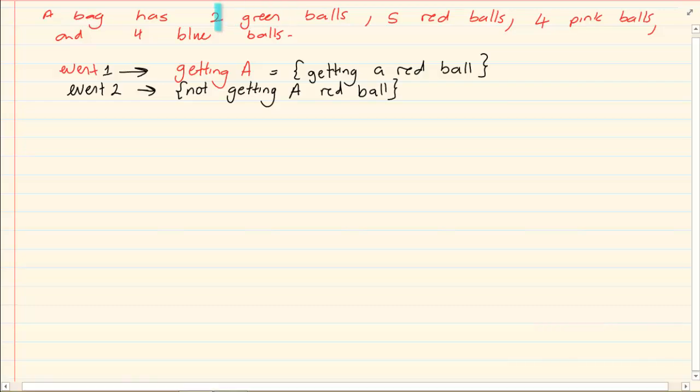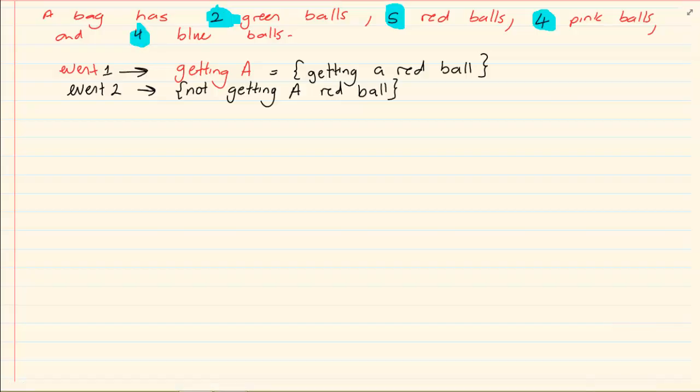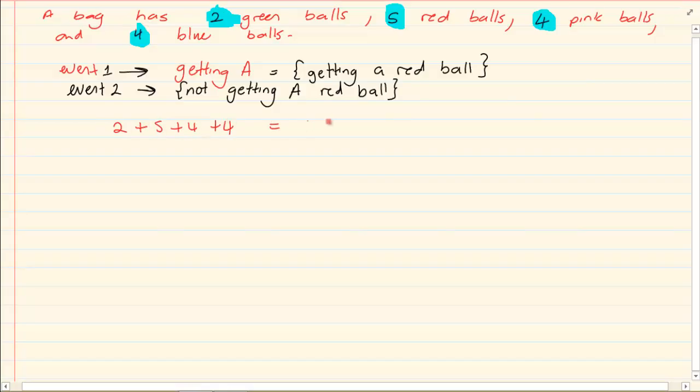So make sure you understand that before coming to this section. Now let us take the following example. We have a bag that has 2 green balls, 5 red balls, 4 pink balls and 4 blue balls. So what is our total? Our total is 2 plus 5 plus 4 plus 4 which is equal to 15.